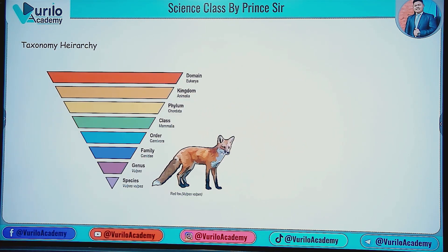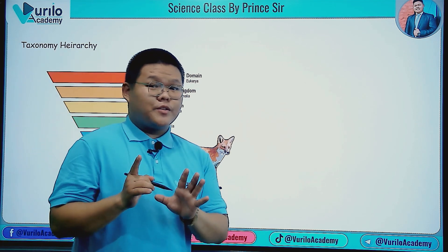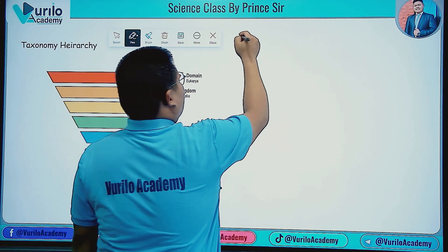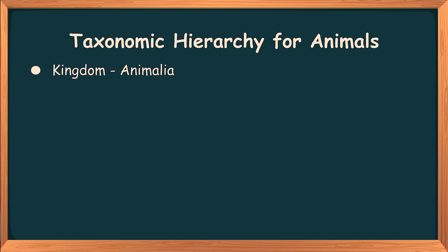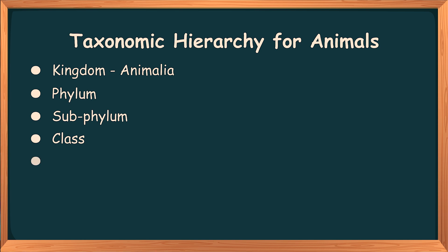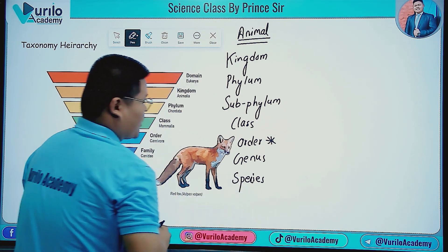To answer many exam questions, you need to understand the taxonomic hierarchy. In the animal case, the classification starts with Kingdom, then Phylum, then Sub-phylum, then Class, then Order, then Family.